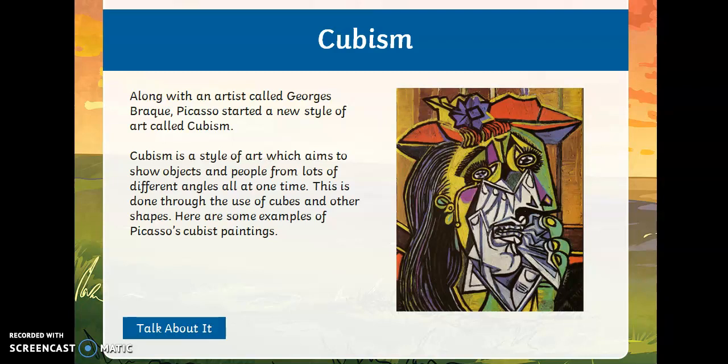Cubism is a style of art which aims to show objects and people from lots of different angles all at one time, through the use of cubes and lots of other shapes. For me, they were doing something a photograph couldn't do — allowing us to look at something from lots and lots of different angles all at once, and maybe giving us a feeling of the whole person or the whole scene, rather than just one snapshot of it, which a realistic photo or painting could do.